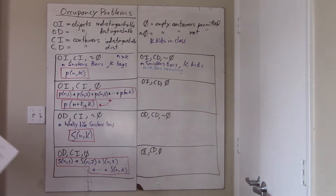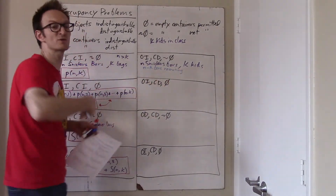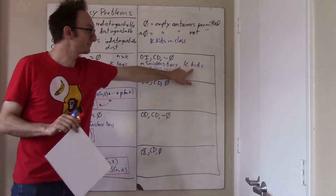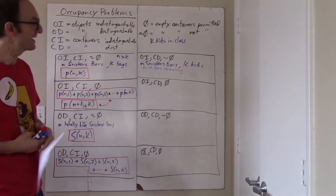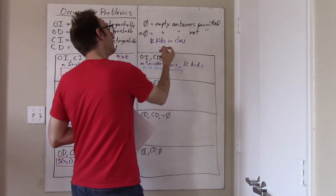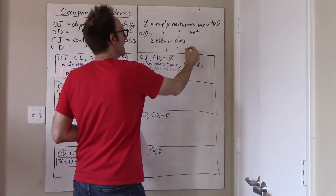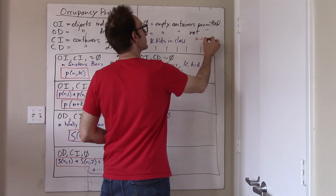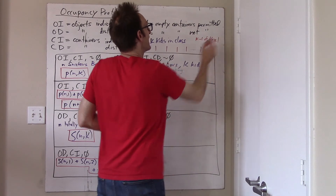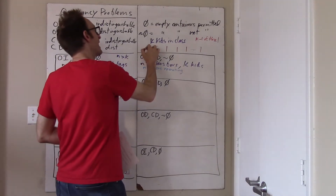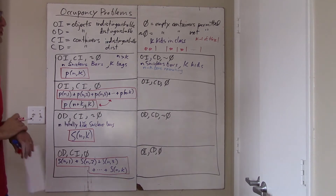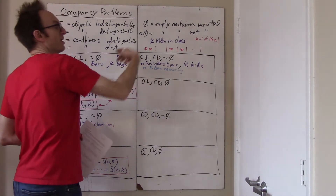If there are N minus K bars remaining, then after I've met my condition that every kid has to get at least one bar, I can distribute them however I want. So now the problem reduces to the number of ways of passing out N minus K bars to the K children where there are no rules. And this is just a stars and bars problem. I have K minus one vertical lines, and now it's simply a matter of distributing N minus K stars in and amongst those K minus one vertical lines.